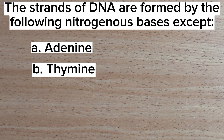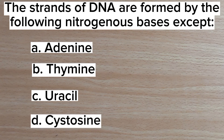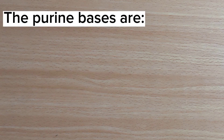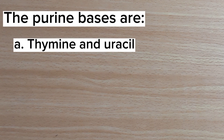Number seven: the strands of DNA are formed by the following nitrogenous bases except — A. Adenine, B. Thymine, C. Uracil, D. Cytosine. Answer: C. Uracil.